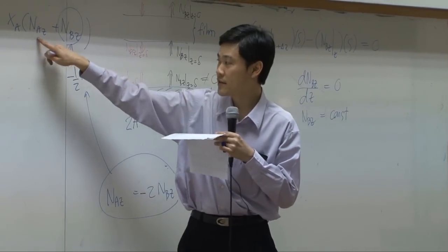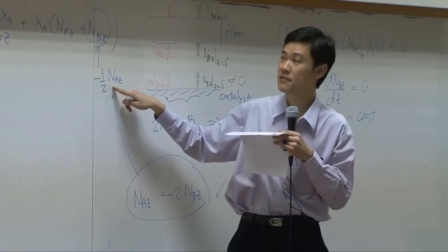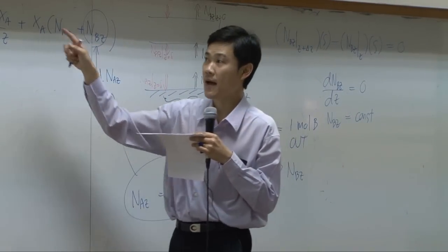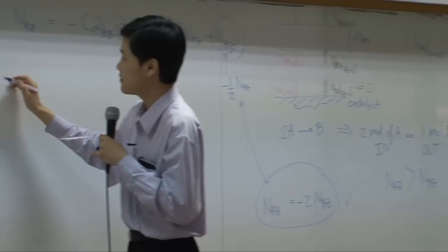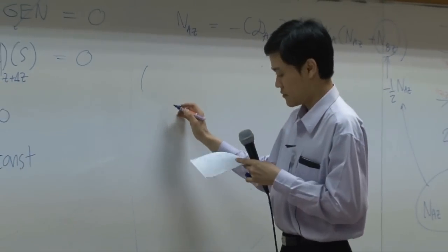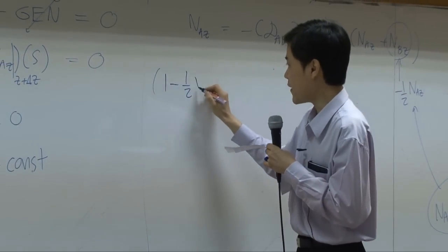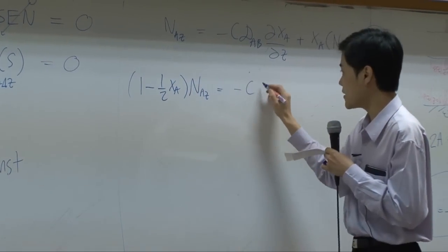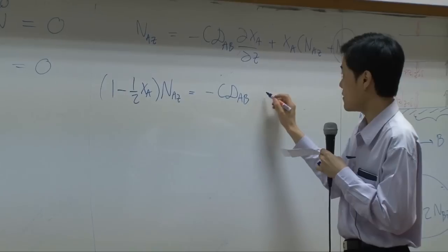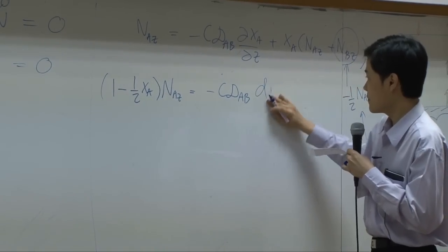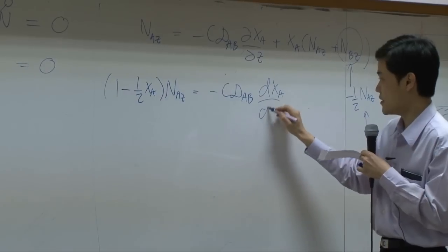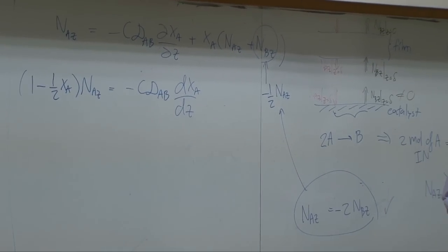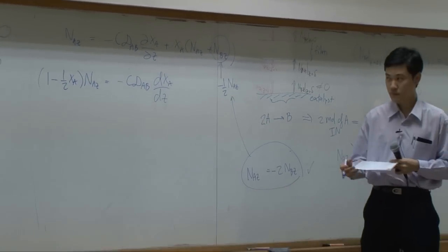Then this is 1 N_A_Z and half of N_A_Z. So as a result, you get 1 over 2. Take it back to this portion. You have 1 minus half of X_A. Okay?